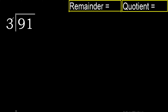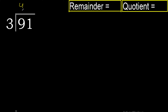91 divided by 3. 9 is not less than 3, therefore we work with 9. 3 multiplied by 4 is 12 — 12 is greater than 9, therefore not. 3 multiplied by 3 is 9. 9 is not greater than 9, so 9 minus 9 is 0.